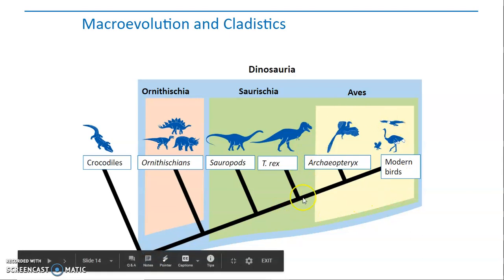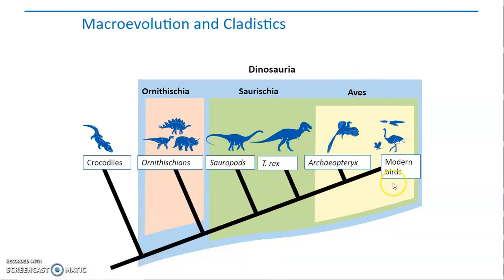Aves is a clade that you have seen before. Aves contains the birds, but if you look, Aves contains not only modern birds but also Archaeopteryx. So some of these clades contain both living and extinct animals.